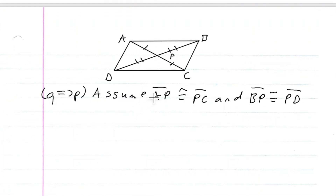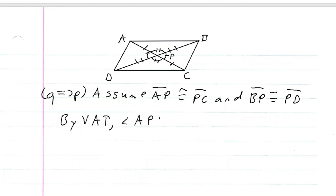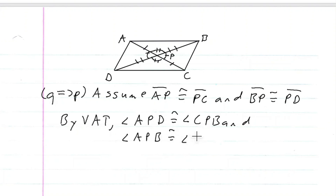Consider triangle APD and triangle CPB. By the vertical angle theorem, angle APD is congruent to angle CPB, and angle APB is congruent to angle CPD. These vertical angle pairs will be key to establishing our triangle congruences.